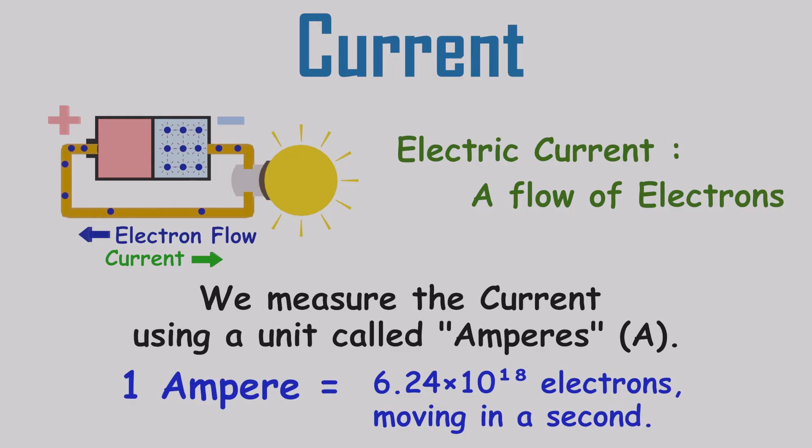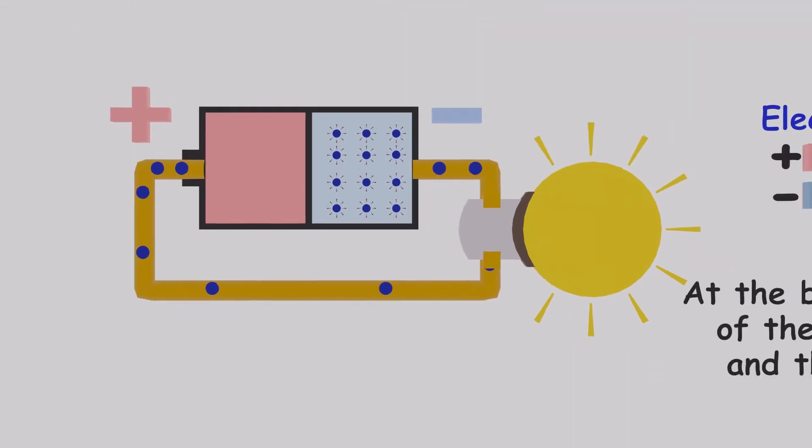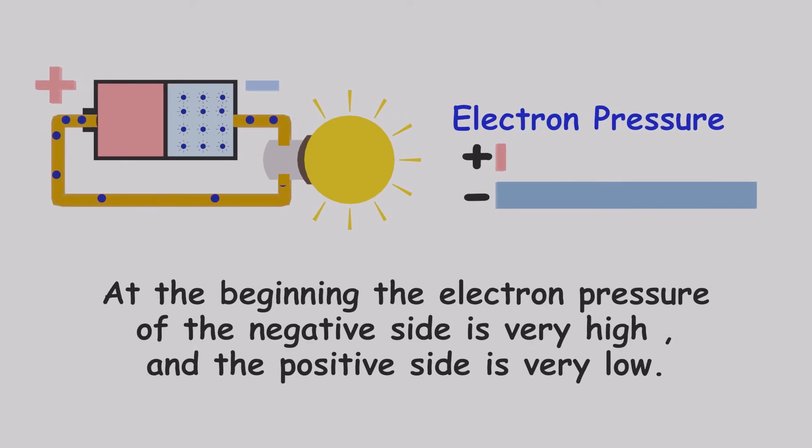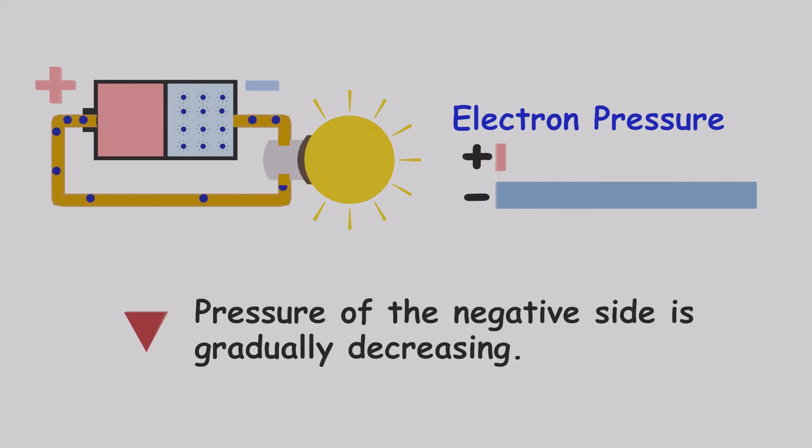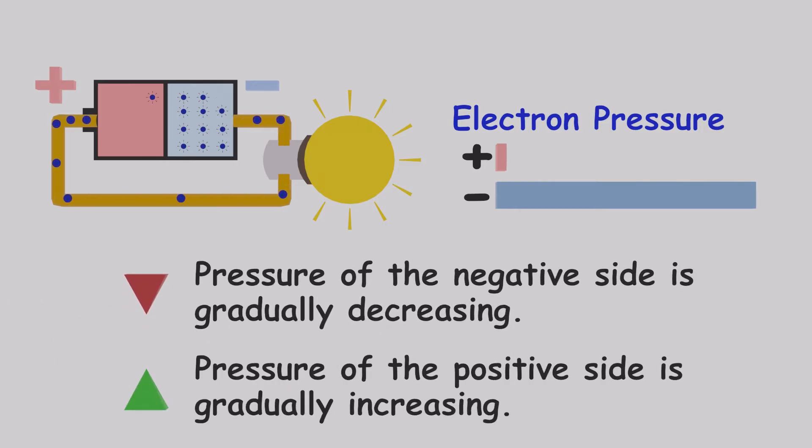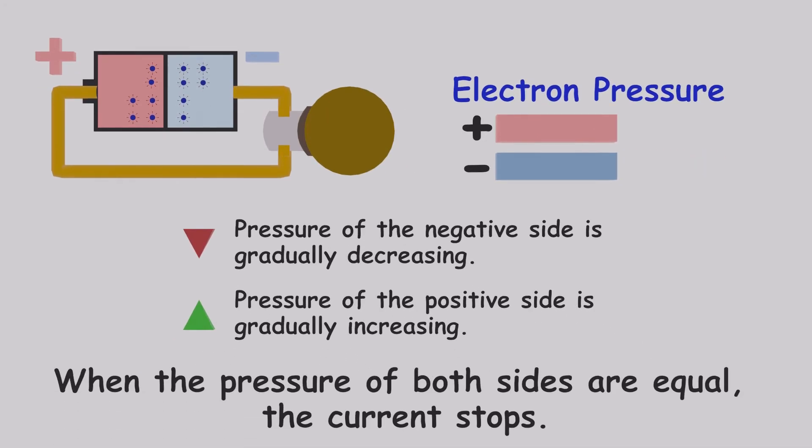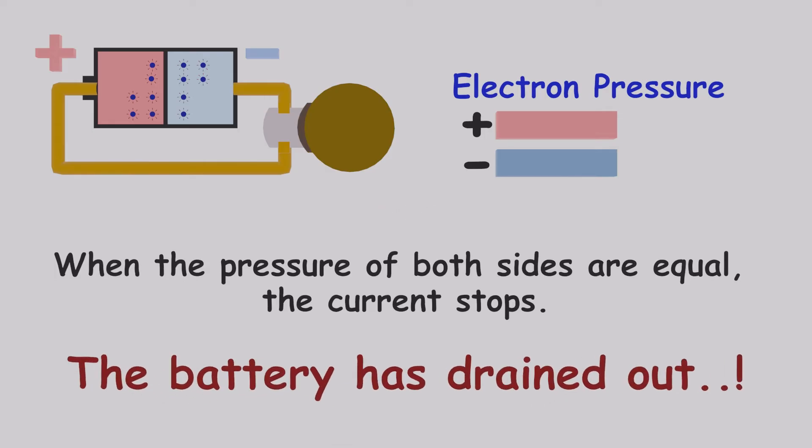At the beginning, the electron pressure of the negative side is very high and the positive side is very low. Since the electrons in the high pressure negative region are moving away to the low pressure positive region, the pressure of the negative side is gradually decreasing and the pressure of the positive side is gradually increasing. After some time connecting the positive and negative side, the electron pressure between the two sides of the battery becomes gradually equal. So now there is no reason for the electrons to flow through the wire, so the current stops. We say that the battery has drained out.